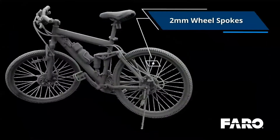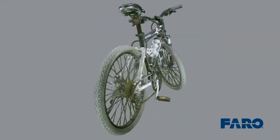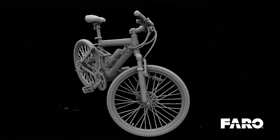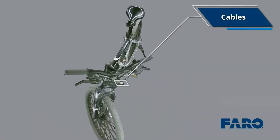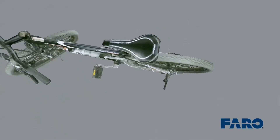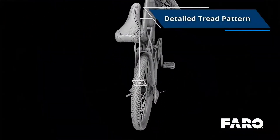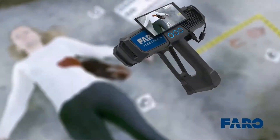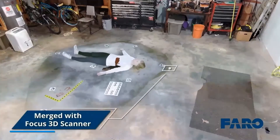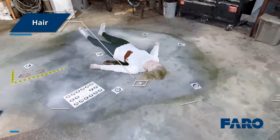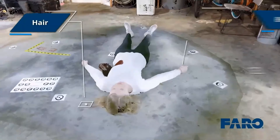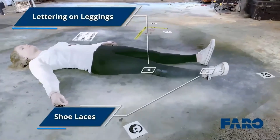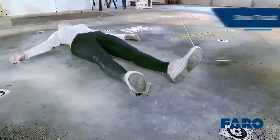We also try to finish the scan where we started to help with closing the loop, which is recommended to be done using the compensation plate provided. In the video you can see the smaller details the Freestyle 2 can capture — tire treads on a bicycle, spokes that are about two millimeters in thickness. This is much more detail than you can get from the Faro Focus on its own. You can even see sprockets in crisp detail. In this forensic scene example, the Freestyle 2 data captures letters on clothing, shoelaces, threads under shoes, and even hair in great detail.